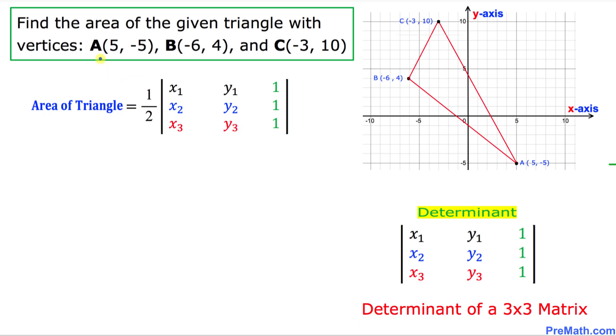And let's focus on these vertices A, B, and C. In this vertex A we are going to call this coordinate x₁, y₁; for B coordinate x₂, y₂; and for C coordinate x₃, y₃.